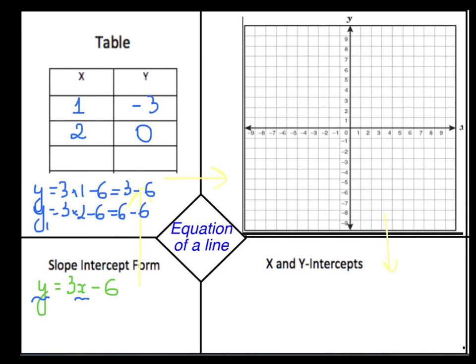Let us take another value, x equals 3. y equals 3 times 3 minus 6, 9 minus 6, which is 3. I have 3 points. As we discussed in class, to draw a line, it is enough to have 2 points. But to make sure that I do not make any mistake, if I have 3 points and they are all on a line, it means that my points are correct.